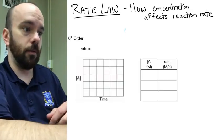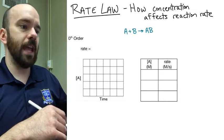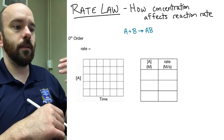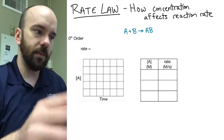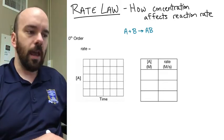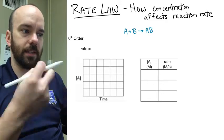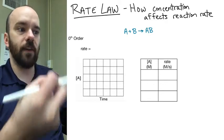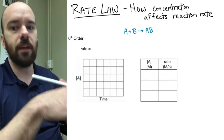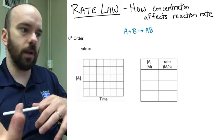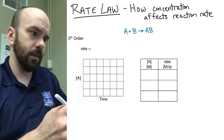We'll start with zeroth order. Let's say that we have a reaction like this: A plus B gives you AB — two reactants reacting together to give a product. We're going to look at reactant A and see how its concentration affects the rate at which this reaction takes place. We could do the same thing for B later on, but we'll just focus on one reactant at a time.